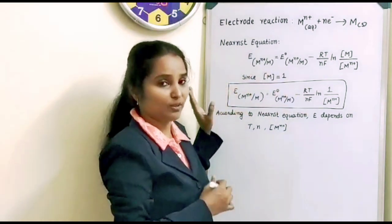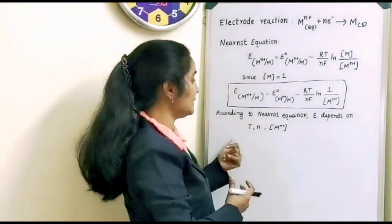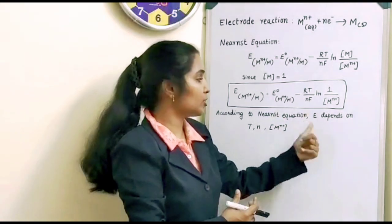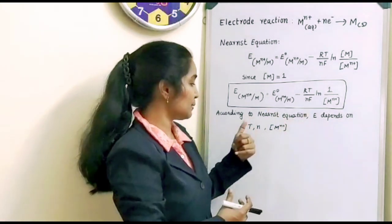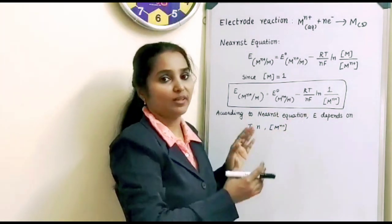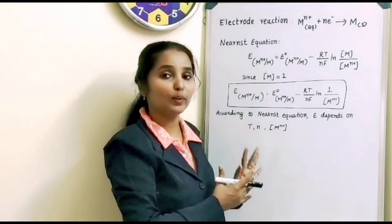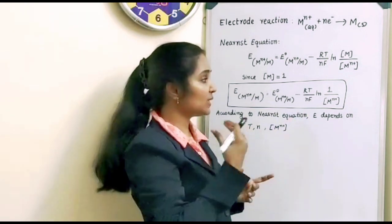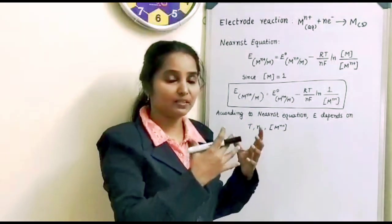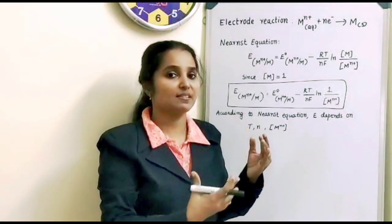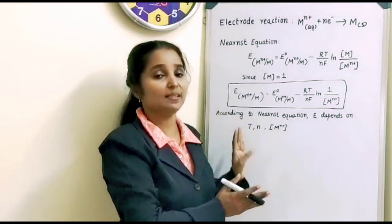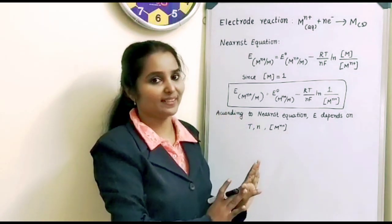According to the Nernst equation, electrode potential depends upon temperature T, number of electrons transferred N, and the concentration [Mⁿ⁺]. Write up to this point and state that electrode potential depends upon T, N, and [Mⁿ⁺]. You will get full marks. In your textbook it is written more complicatedly, but for this particular question, writing this much will get you full marks.